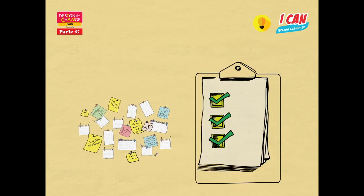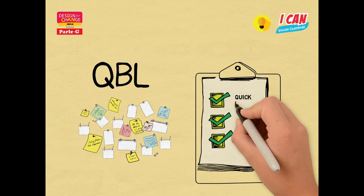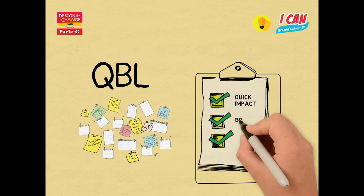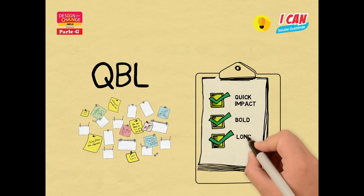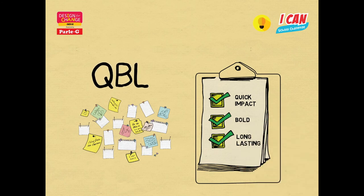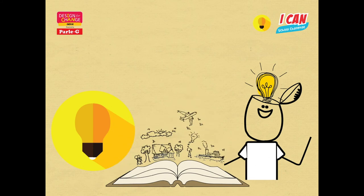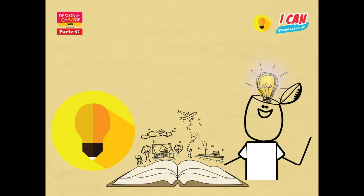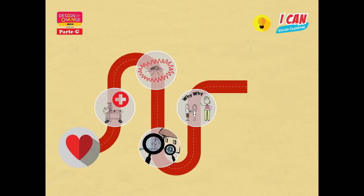Once there are a whole lot of ideas listed, introduce the children to a quality checklist — we call it the QBL principle. Q stands for Quick impact, B stands for Bold, and L stands for Long-lasting. Children's solutions need to have a quick impact, they need to be big and bold, and they need to have long-lasting impact. The crucial skills children will learn in the Imagine process are creativity and innovation.